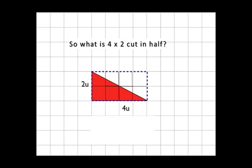So, what is 4 times 2 cut in half? Well, we know 4 times 2 is 8. We want to get rid of half. That's dividing it by 2. So, we write an equation that looks like this: base times height, that's 4 times 2, cut in half, that's divided by 2, equals 4 units squared for this right triangle.